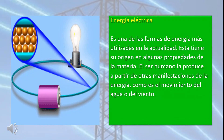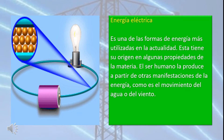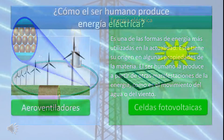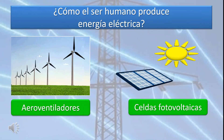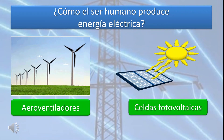La energía eléctrica es una de las formas de energía más utilizadas en la actualidad. Esta tiene su origen en algunas propiedades de la materia. El ser humano la produce a partir de otras manifestaciones de la energía, como es el movimiento del agua o del viento. En base a esto, surge la siguiente pregunta: ¿cómo el ser humano produce energía eléctrica?